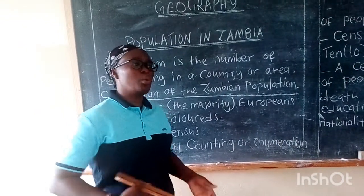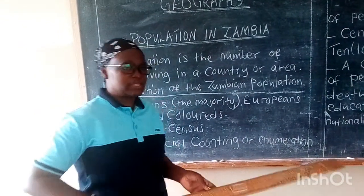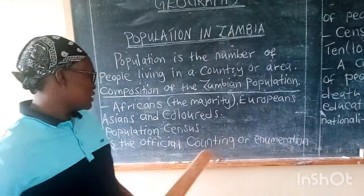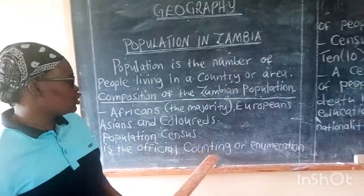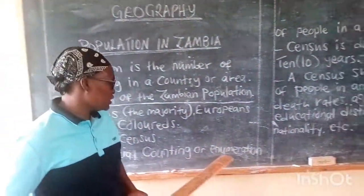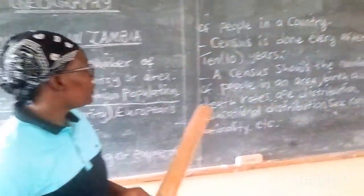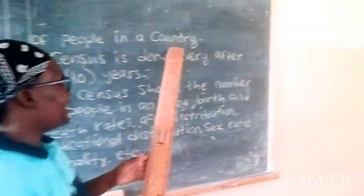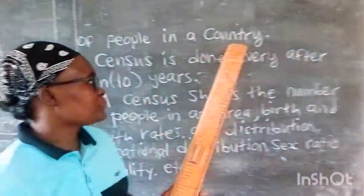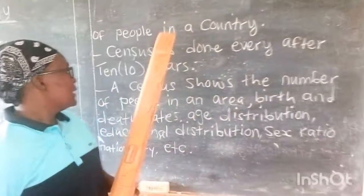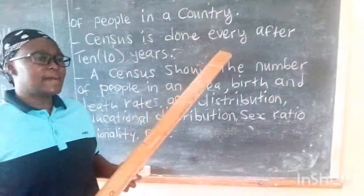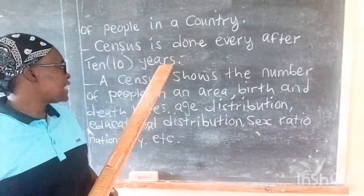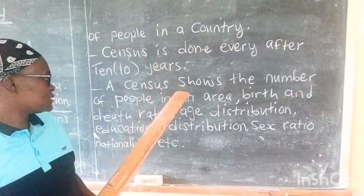They do what we call census. Census is the official counting or enumeration of people in a country. Census in Zambia is done every after 10 years.